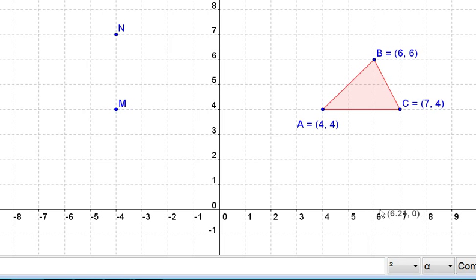B is 6 to the right and 6 up, so we now will go 6 up and 6 to the left. Here is the new triangle.